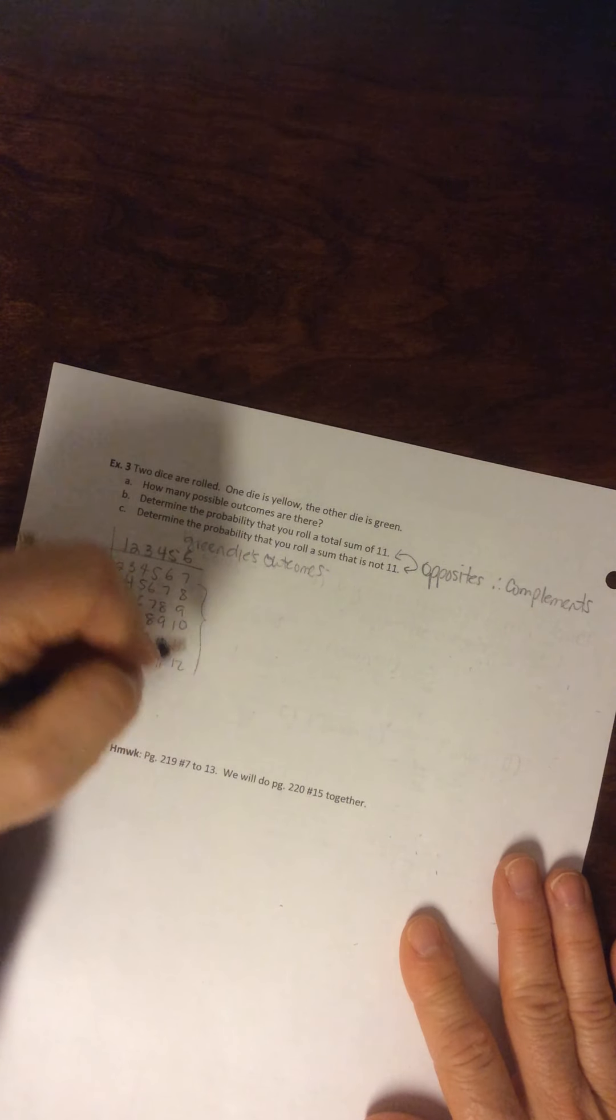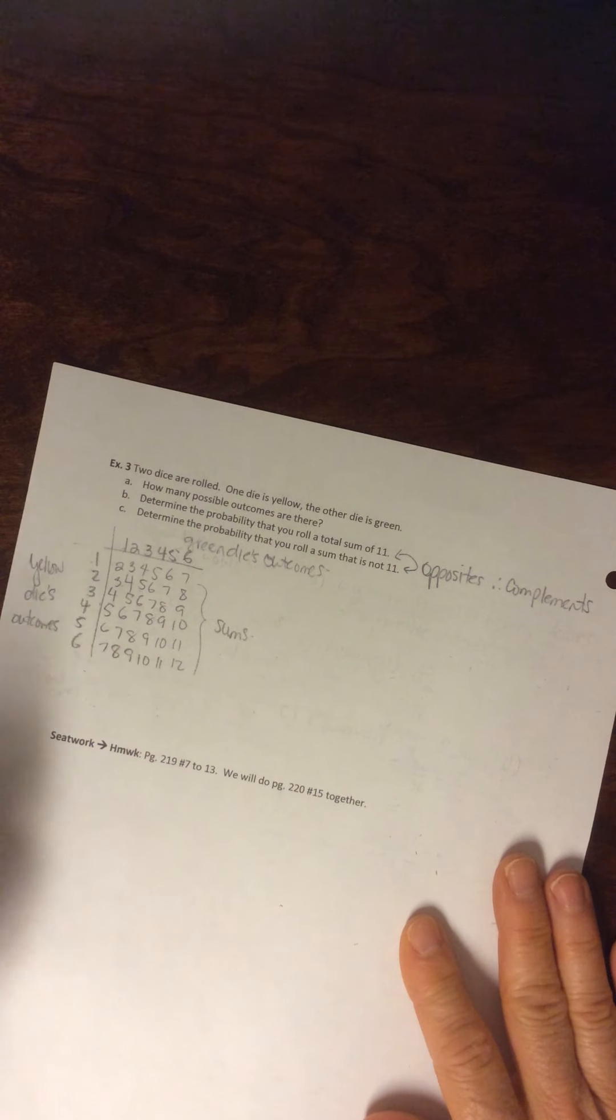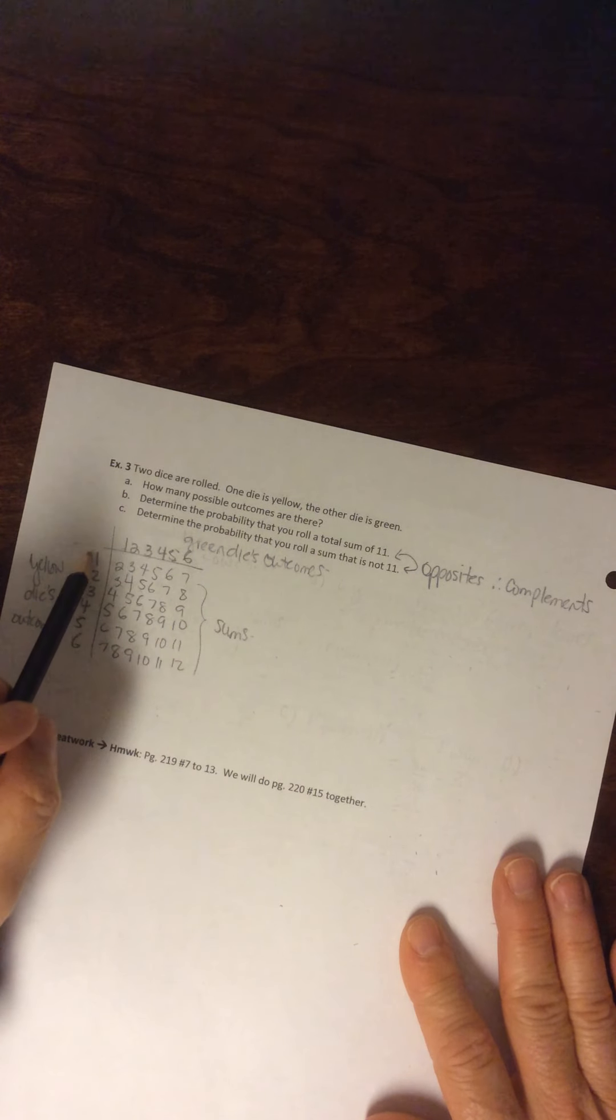So inside the grid are the sums, okay? And outside of the grid are the outcomes.